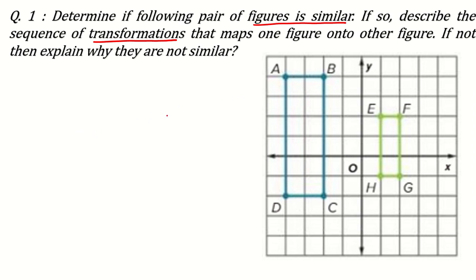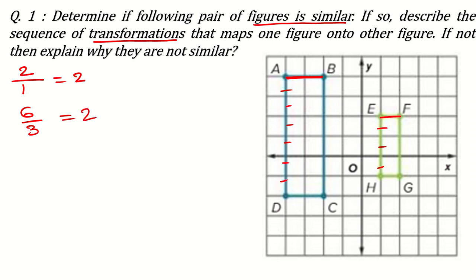If the ratio of their sides are the same, the figures are similar. For example, what is the side AB? It is 2, and what is the side EF? It is 1 — so 2 over 1 means a ratio of 2. Now counting AD, it is 6, and the corresponding side is 3, so 6 over 3 is again 2. Similarly for DC it is 2 and for HG it is 1, so again the ratio is 2.